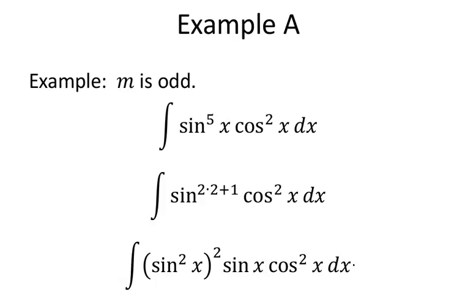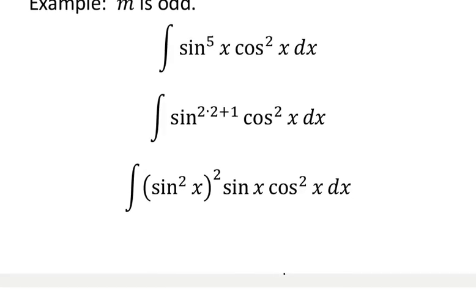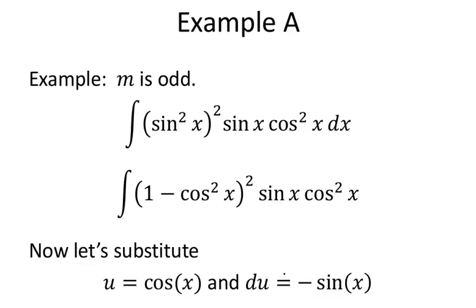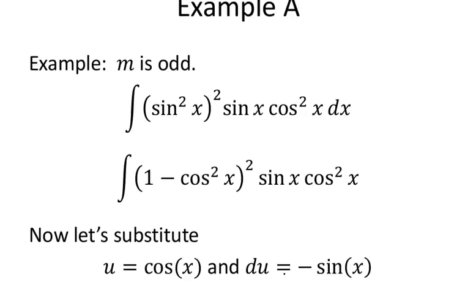Here's a specific case we can solve: sine of x to the fifth power times cosine squared of x. This can be written as 2 times 2 plus 1, which is an alternative way of writing 5. So this becomes sine squared of x squared times sine to the first power, times cosine squared of x.